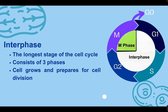Before I go into the steps of interphase, I want to point out this arrow that says G0. This is not a part of the stages of cell division — it's for cells that no longer need to divide. For example, our nerve cells: once we've reached a certain age and developed our nervous system, those cells don't keep dividing. That's why nerve damage is permanent, because those cells are not producing more — they're in G0. But we're now going to focus on the cells that are dividing and making new cells.